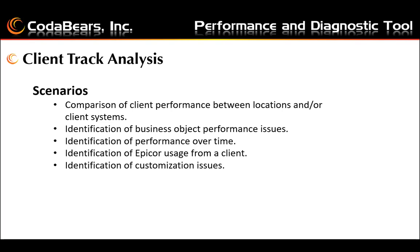Types of scenarios for client trace analysis include comparison of client performance between locations or client systems. You may have specific users reporting performance issues from their systems. By evaluating the client UI trace logs from multiple desktops or laptops performing similar EPICOR functions, you can determine differences in client execution times for the same method calls. This may provide insight into your network, especially when comparing LAN users against WAN users.